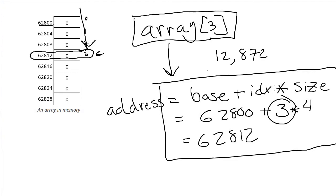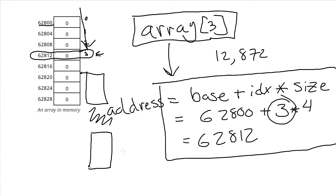This mathematical formula for finding where to jump to in the array only works if the array is stored contiguously in order with no gaps. You can't have an array that starts at one place, then there's some stuff that's not part of the array, and then the array continues on somewhere else. If you were to do that, this formula would no longer work for finding the things in the second half. So that's why an array has to be stored contiguously — all of the elements have to be right next to each other with no gaps in memory.